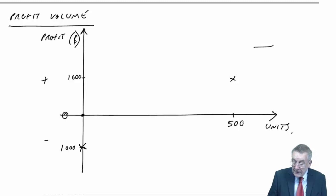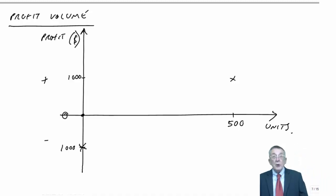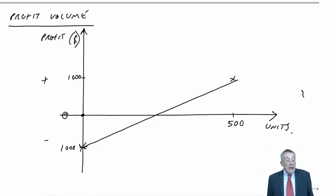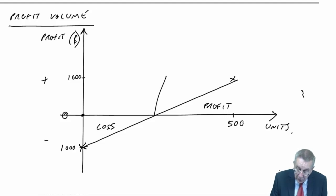Here is profit, here is loss. The relationship's linear, so the way the profit would vary with the level of output would be like that. It's almost too simple. Anywhere up here, we're making a profit. Anywhere down here, we're making a loss. Where we cross the axis is the break-even point.